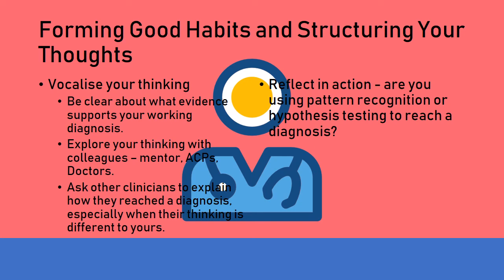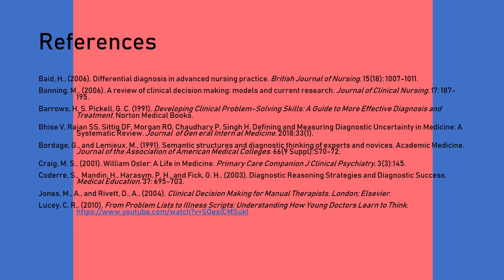That brings us to the end of this presentation. In this video we've looked more closely at our two main models of clinical decision making — hypothesis testing and pattern recognition — the two different ends of our spectrum. Realistically, as clinicians we're going to use a little bit of both. The main thing is to pick apart your own thought processes, understand how you're approaching the formation of a working diagnosis, reflect on those processes, and try to put information into these models to see if that helps improve your diagnostic accuracy. Thank you for listening — you can now move on to part three of this series.